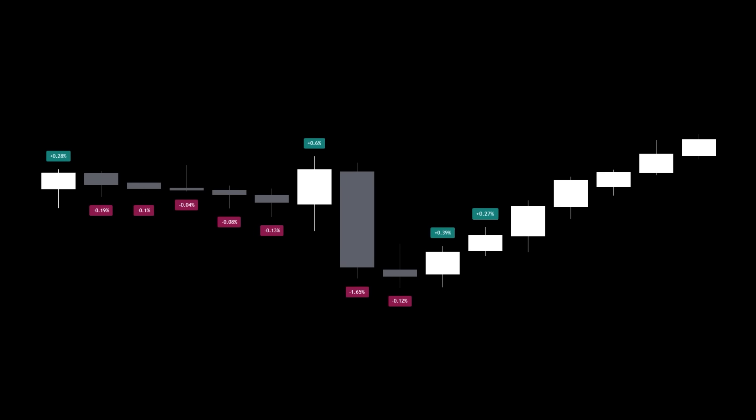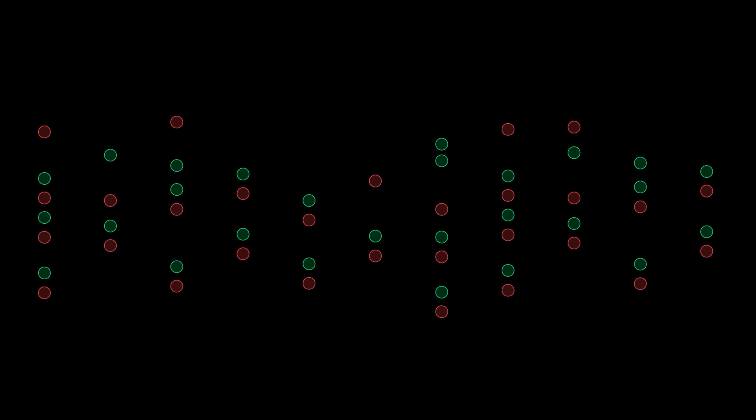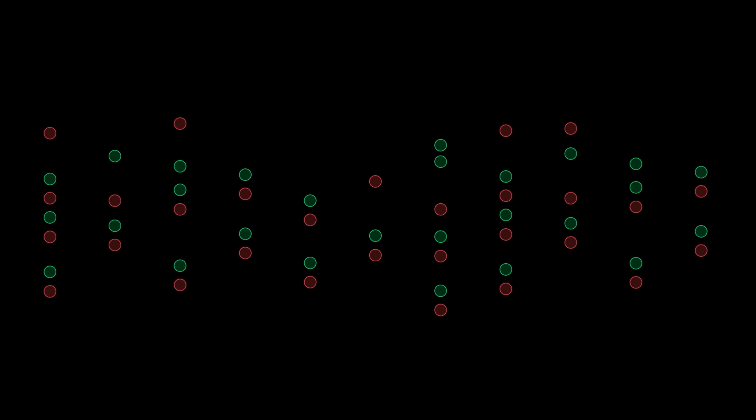So here's the idea we'll use for our example. Every candle on a chart has a percentage change in price compared to the previous one. If you were to mark all of those changes as circles — green for bullish changes and red for bearish changes — you'd usually find they even out. Roughly half of the candles are bullish, and roughly half are bearish.